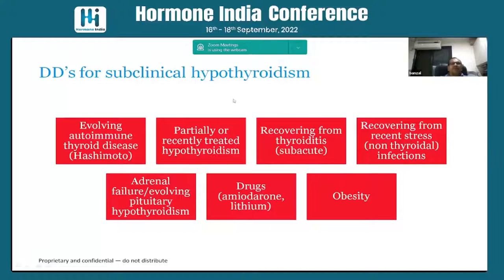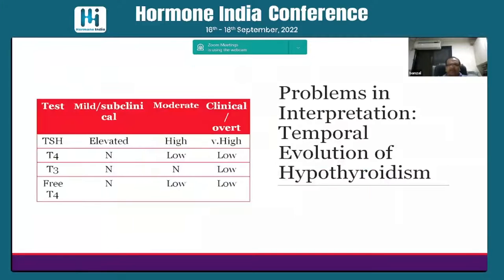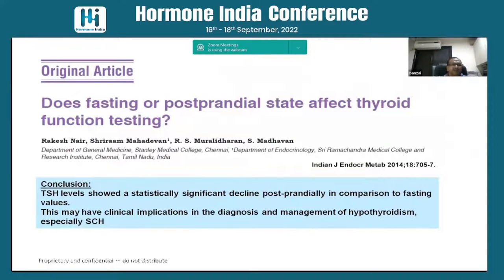Differential diagnosis for subclinical hypothyroidism includes autoimmune thyroid disease like Hashimoto's, partially or recently treated hypothyroidism, recovering from thyroiditis, or recovering from non-thyroidal illness. Adrenal or pituitary hypothyroidism, as well as amiodarone, lithium, and obesity, can all give rise to subclinical hypothyroidism. Also important: TSH shows a significant decline postprandially, so the timing of the blood sample — fasting versus post-meal — matters in diagnosis.